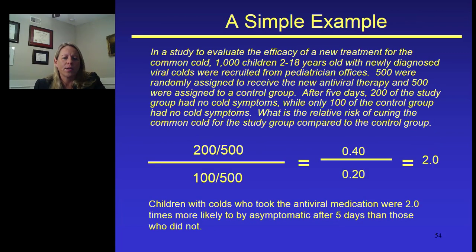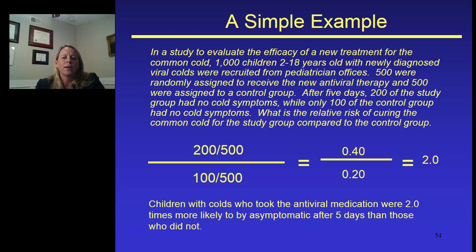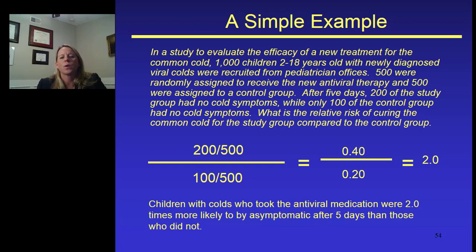A simple example: a study was conducted to evaluate the efficacy of a new treatment for the common cold. This trial enrolled 1,000 children who were newly diagnosed with a viral cold. 500 were randomly assigned to the new antiviral therapy, and 500 were assigned to a control group. After 5 days, 200 of the study group — the new antiviral therapy group — had no cold symptoms, while 100 of the control group had no cold symptoms.